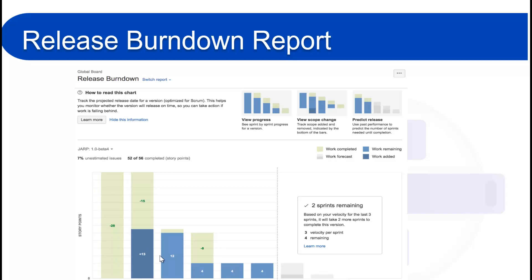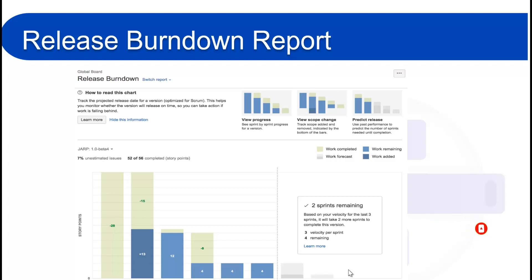The gray areas or gray bars at the end of the chart are the predicted number of sprints it will take to complete the version, based on previous sprint performance or the changes in your sprint.